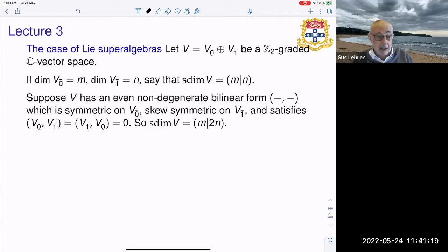So the super dimension of v has to be, the even part can be anything but the odd part has to be a symplectic space. So that's called an orthosymplectic super space.